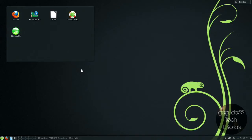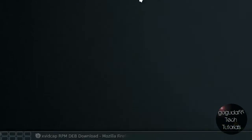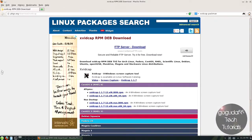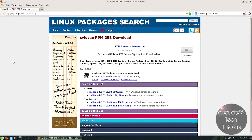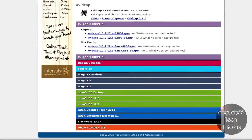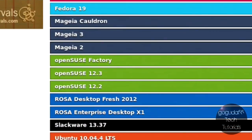The program that we're going to be using is called XVIDCAP. The first thing you're going to want to do is click on the link that I have down in the description below. It'll bring you to this page, and you're going to need to click on your distribution. If you don't see your distribution in this list, click on one that is extremely similar to yours. Normally that'll work.